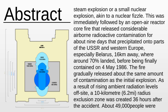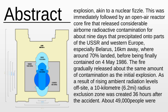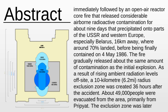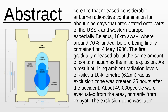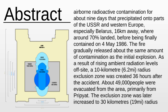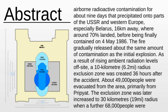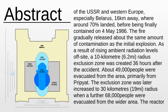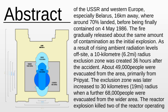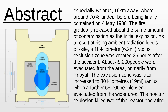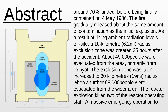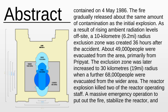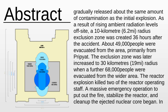This was immediately followed by an open-air reactor core fire that released considerable airborne radioactive contamination for about nine days, that precipitated onto parts of the USSR and Western Europe, especially Belarus, 16 kilometers away, where around 70 percent landed, before being finally contained on May 4, 1986. The fire gradually released about the same amount of contamination as the initial explosion.